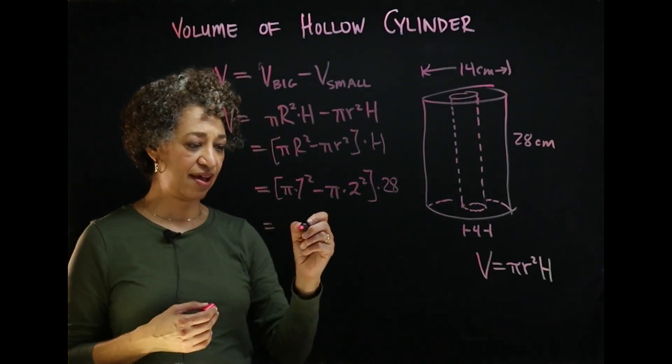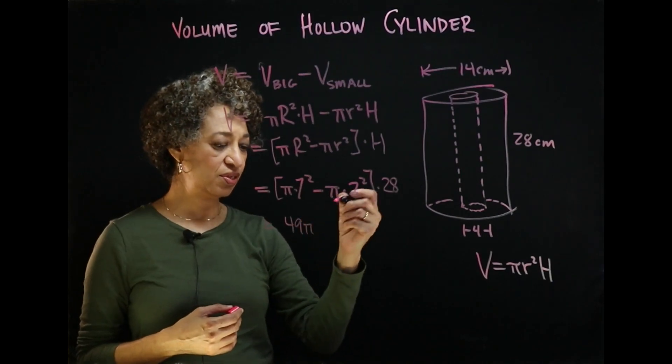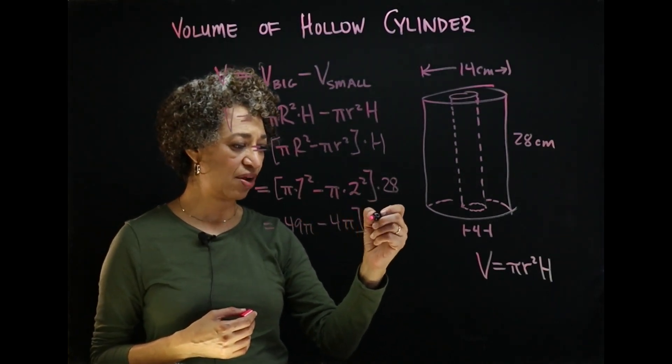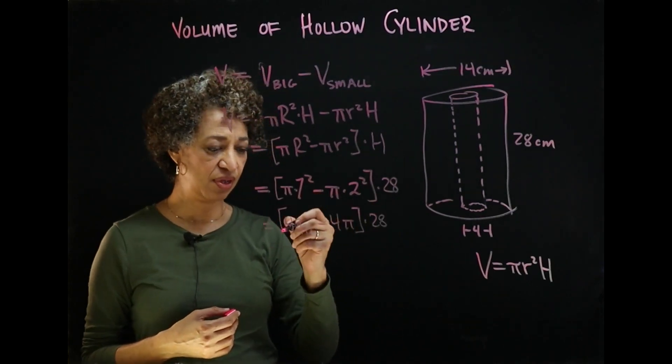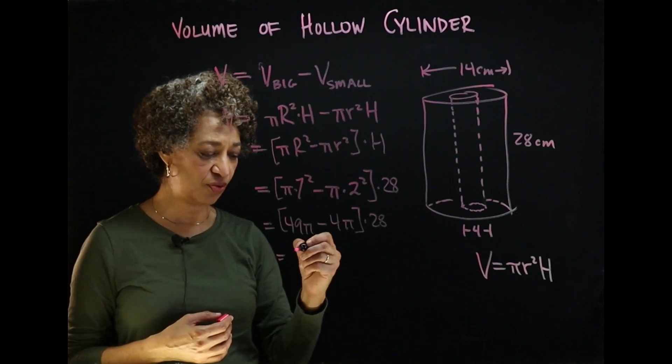So we have seven squared is 49. Two squared is four. And we're going to multiply that result times 28. 49 pi minus 4 pi is 45 pi.